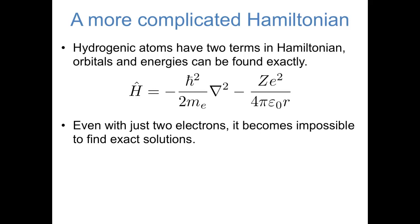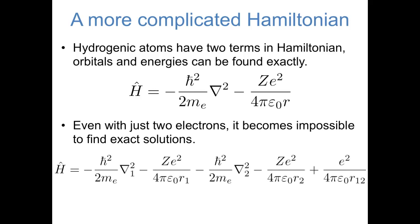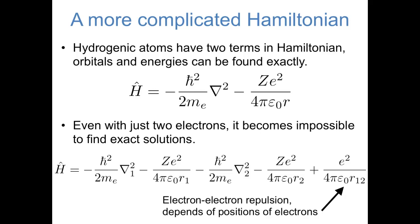Let's think about the different terms in the Hamiltonian operator of a helium atom. Because there are now two electrons and a nucleus, we have to think about the kinetic energy of the first electron, the potential energy of the first electron with the nucleus, the kinetic energy of the second electron, the potential energy of the second electron with the nucleus, and the repulsion between the two electrons. So even adding just one electron, we've added three different terms to the Hamiltonian. It turns out to be this last term — the electron-electron repulsion term — that really causes problems. With both electrons delocalized in orbitals, it's difficult to think about how the position of one electron affects the energy of the other, and vice versa. This electron-electron repulsion term is what makes it impossible to exactly solve the Schrödinger equation for multi-electron systems.